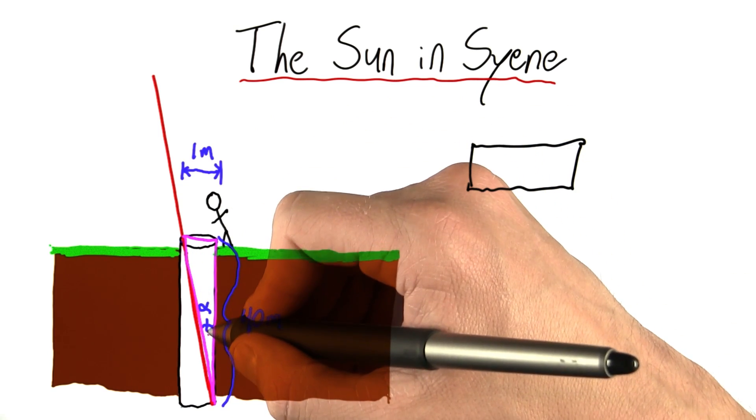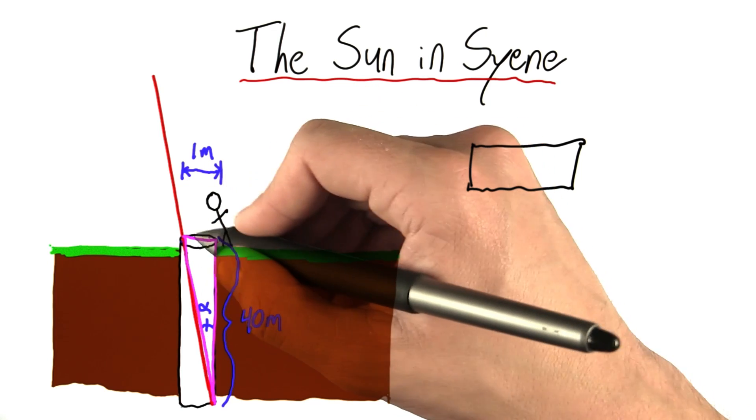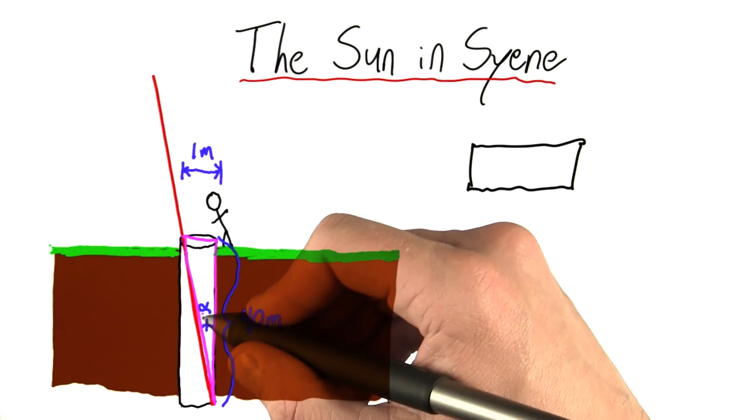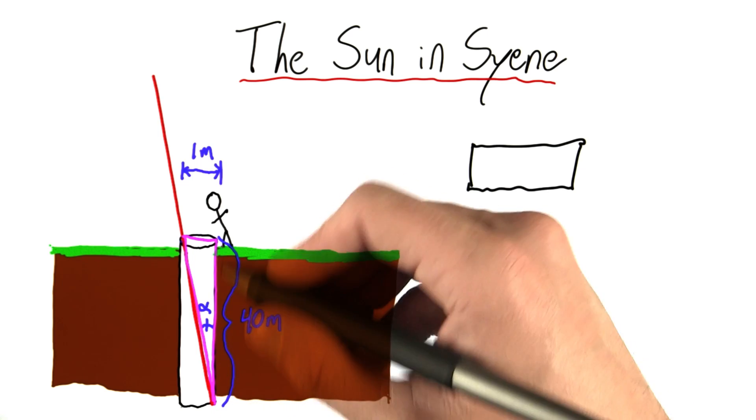And here, turns out the side opposite alpha is the width of the well, which is 1 meter. And the side adjacent to alpha is the depth of the well, which is 40 meters.